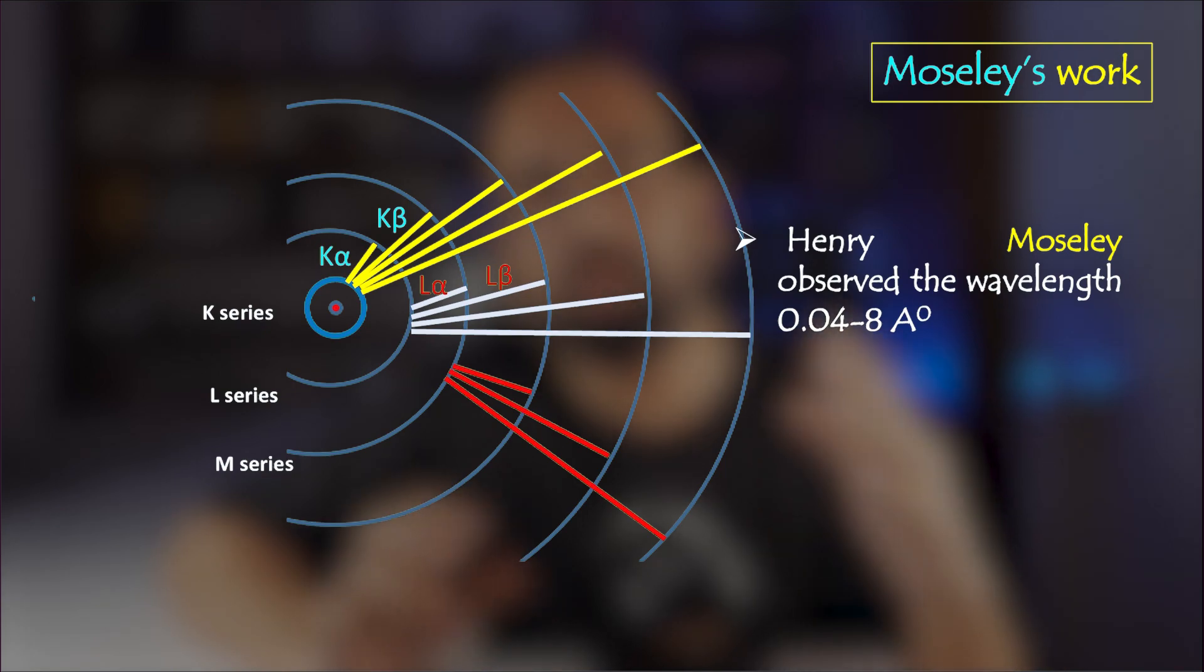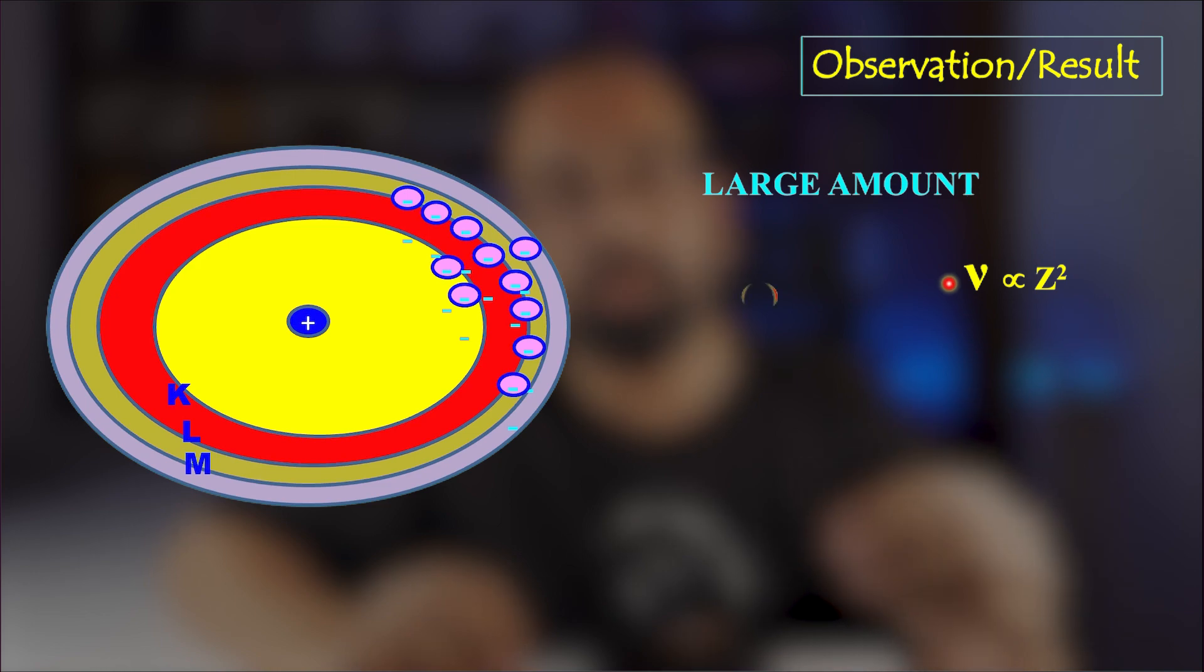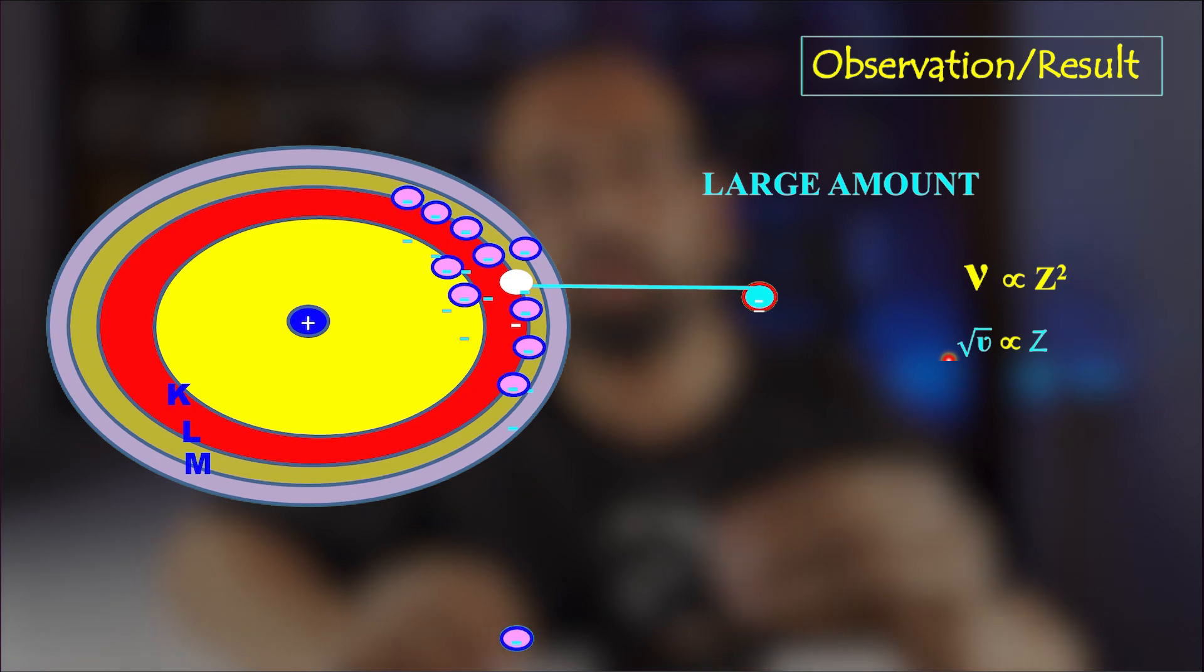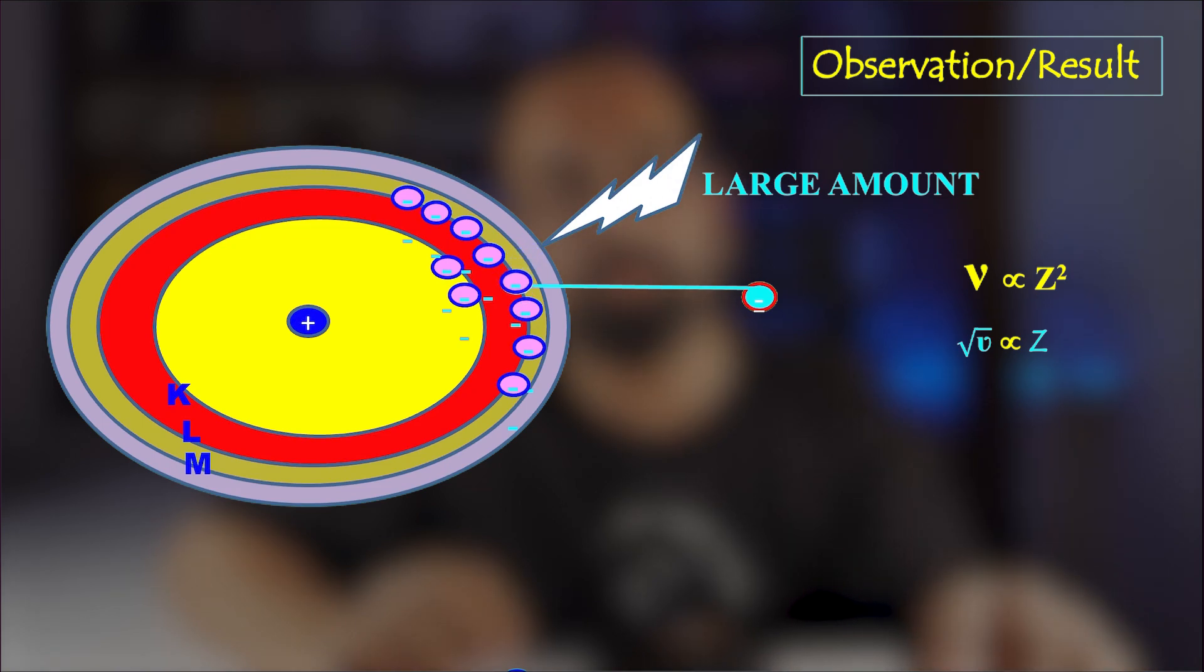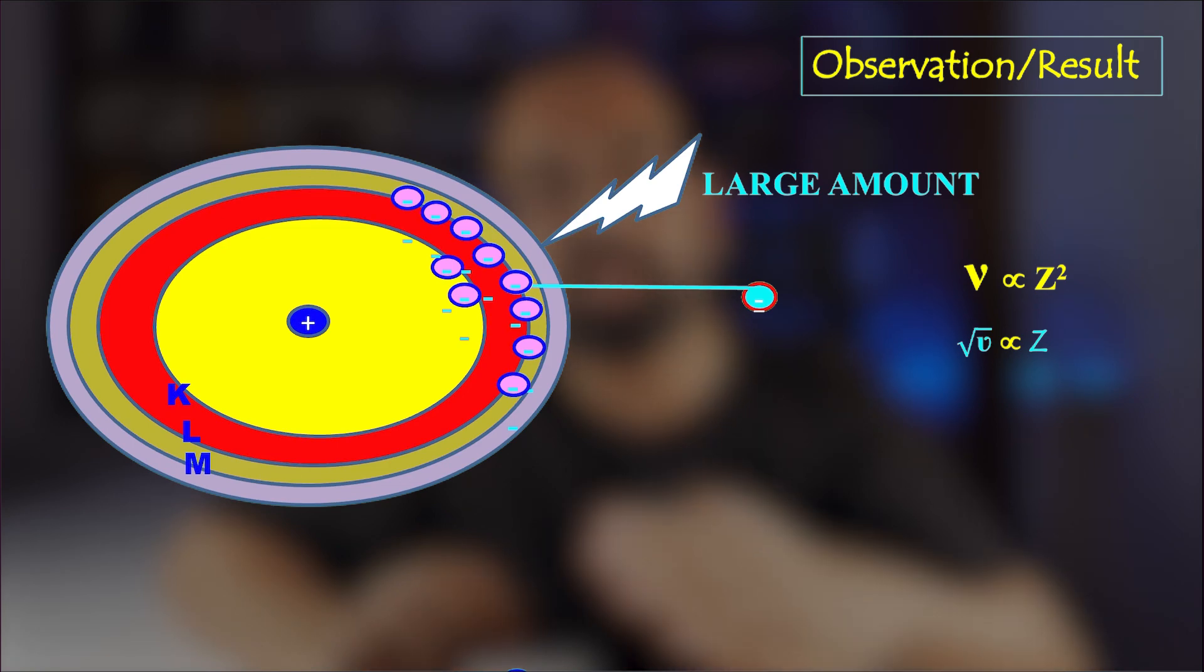After studying characteristics and line spectrum of X-rays of the 38 elements, Moseley proposed a law. According to Moseley's law, the square root of the frequency of the X-rays is directly proportional to the atomic number of the target material. This means that the heavier the target materials produce more powerful X-rays as compared to the lighter target materials.